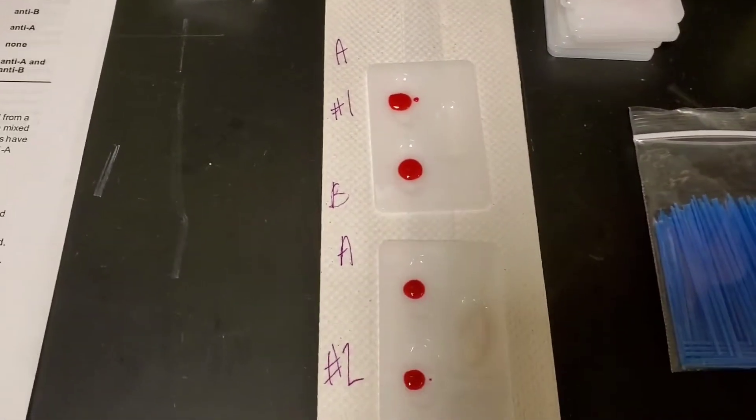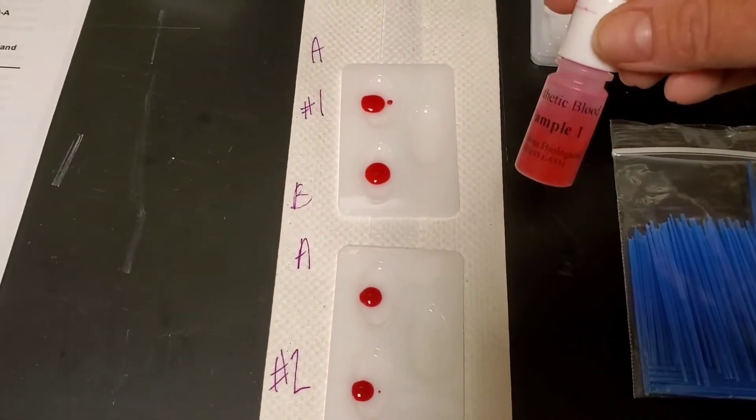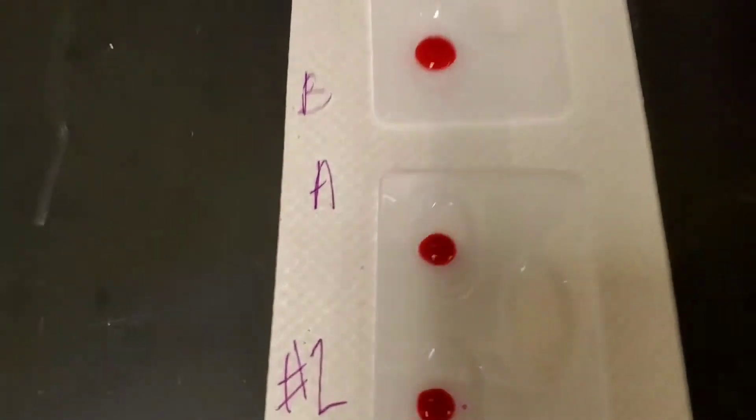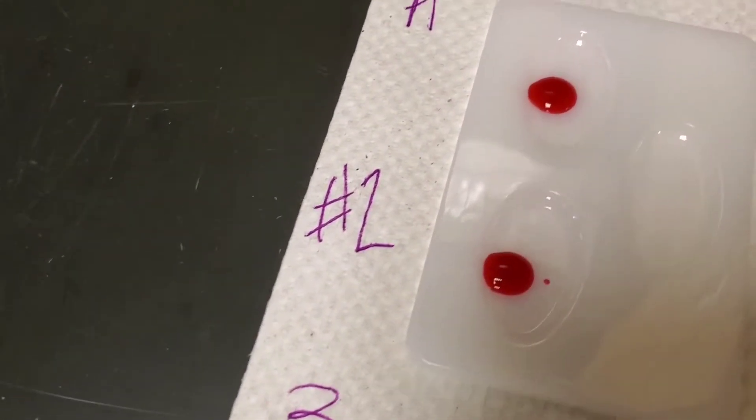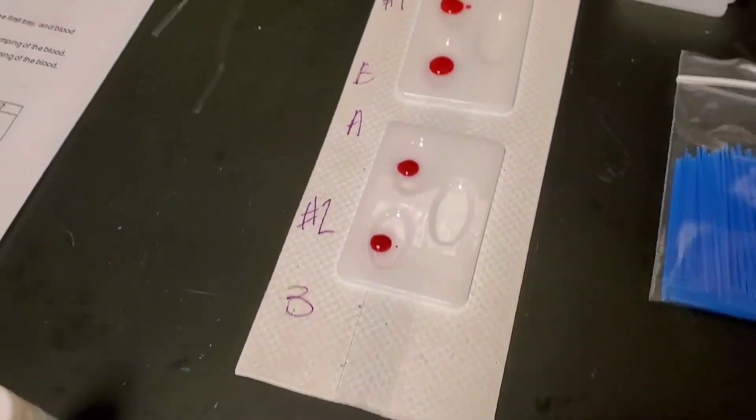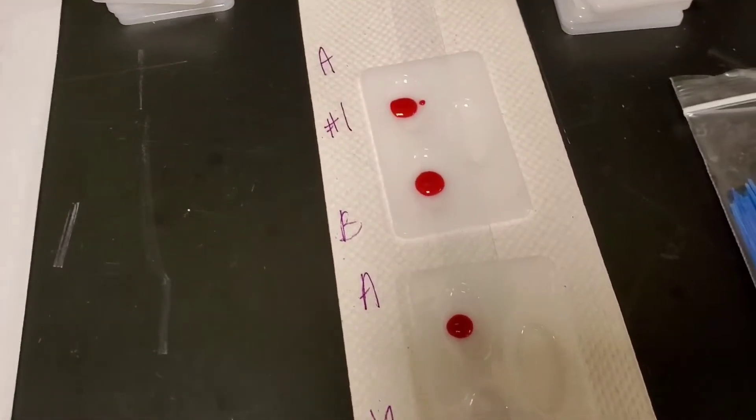Now I've taken the sample of blood and dropped it in there, so you can see it's shiny. There's no clumping going on, it's a homogenous mixture.